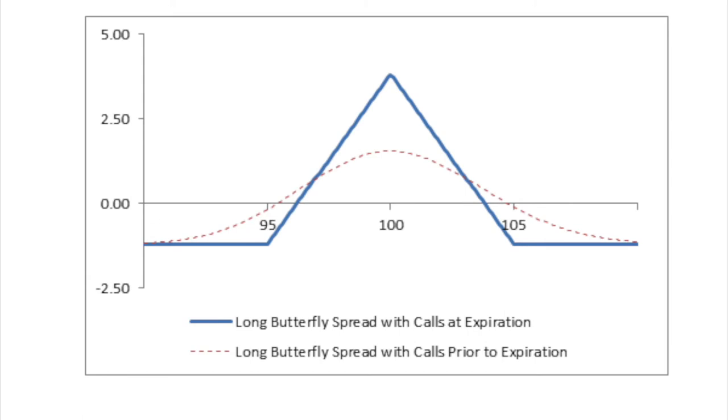The seventh strategy is the long call butterfly spread, which is different from the previous ones. With this strategy, you're betting that the stock price will NOT move a lot. You need to buy one in-the-money call at a lower strike, sell two at-the-money call options, and buy one out-of-the-money call option. Your maximum potential is when the stock remains unchanged, and you make a loss when the stock does either an upward or downward move.